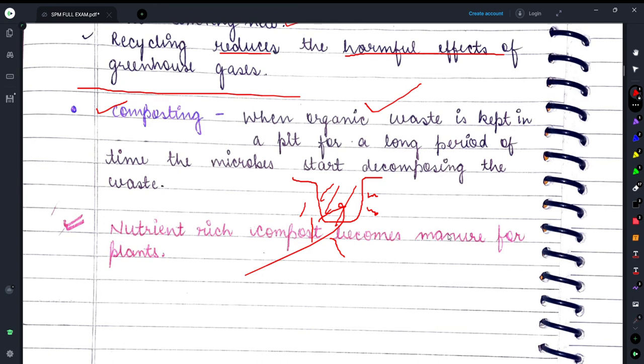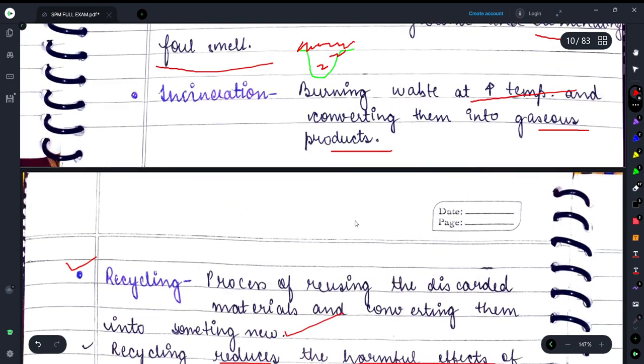And after that it is used as manure. It is used as manure, meaning khad. So that compost which is nutrient-rich, we use as manure or khad for plants so that their growth is good.